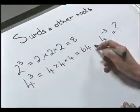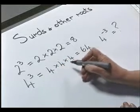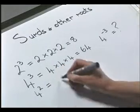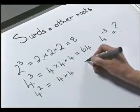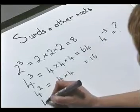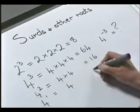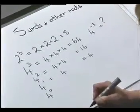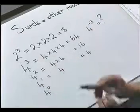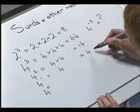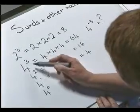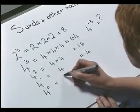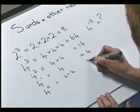Well, we go back to what we know. 4 cubed equals 4 times 4 times 4, which is 64. 4 squared equals 4 times 4, and that equals 16. 4 to the power of 1 is 4. And 4 to the 0 — if we look at our pattern in our calculations, we are dividing by 4 each time, and the index decreases by 1. So 4 to the 0 must be 4 divided by 4, which equals 1.